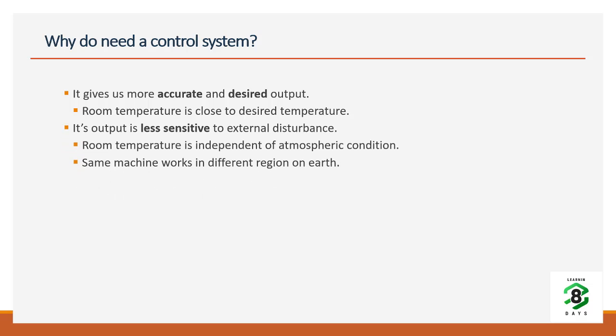The second benefit is that the output is less sensitive to external disturbance. That means the room temperature is independent of atmospheric conditions — whether it is 40 degrees outside or minus 10 degrees outside, the air conditioner should maintain the temperature set by the user. The same machine works in different regions, whether it is a polar region dominated by winter or a tropical area like India — it does not matter; you set the temperature and it will try to maintain it within that closed room.